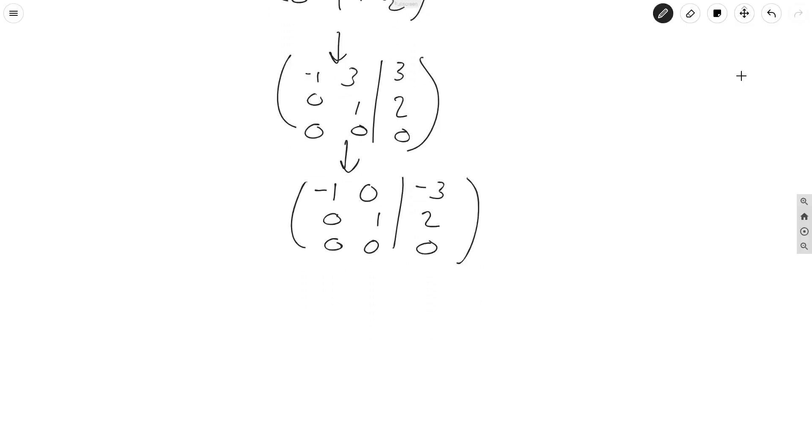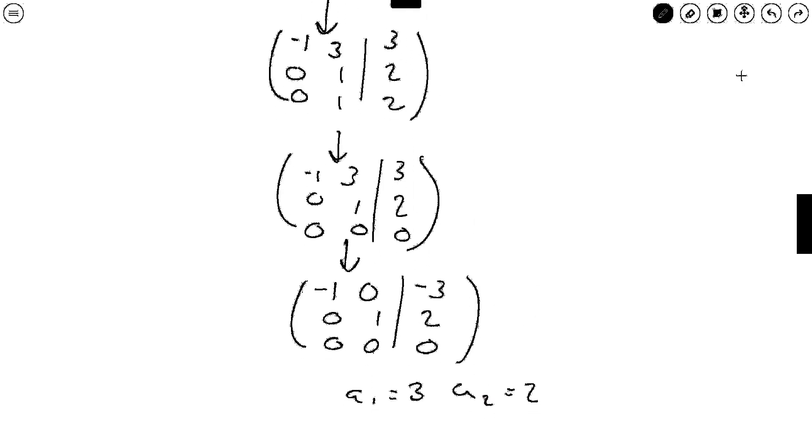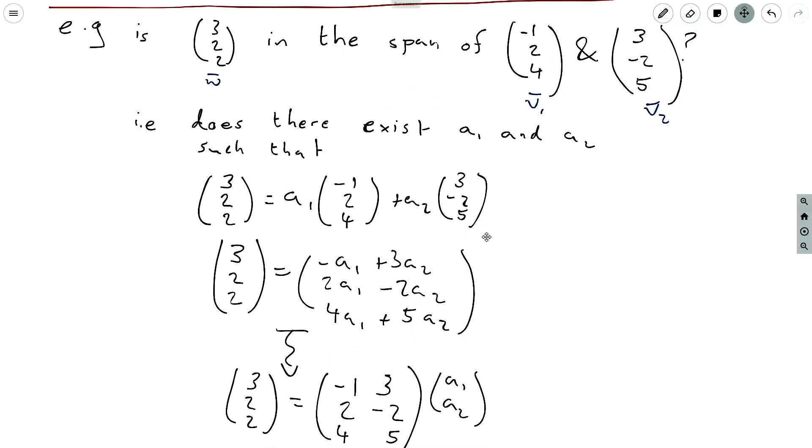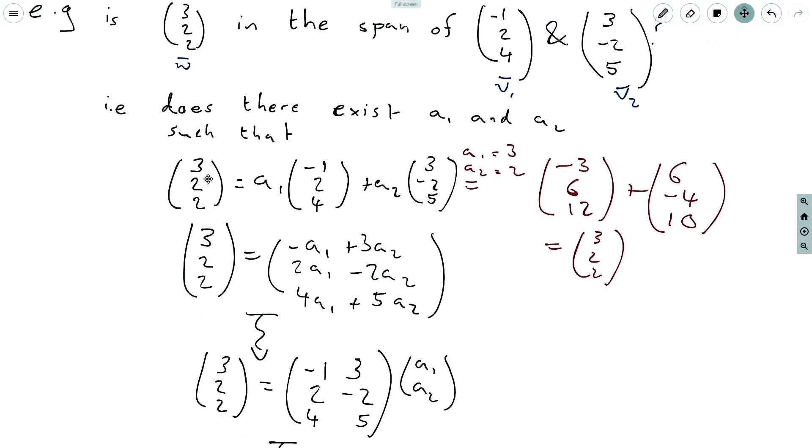And so we get out that a1 is equal to 3 or -a1 is equal to -3 and a2 is equal to 2. And if we can compare this to our initial question if we substitute in a1, let's just do a little note here: if a1 is equal to 3 and a2 equal to 2 then that first vector becomes a1 times (-1,2,4) becomes (-3,6,12) and a2 times this is (6,-4,10) and these are clearly equal to (3,2,2) as desired so indeed a1 equals 3 and a2 is equal to 2 is a solution so the takeaway from all that is that indeed yes this vector (3,2,2) is in the span of (-1,2,4) and (3,-2,5).